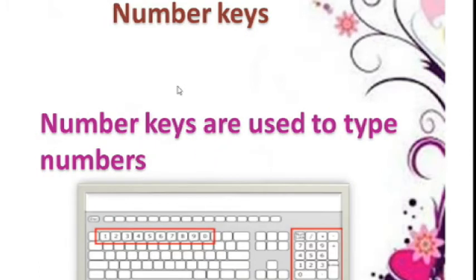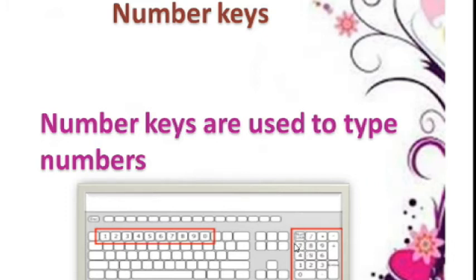Next we discussed about number keys. Keys labelled with numbers from 0 to 9. Look at the picture — you can see numbers on some keys. These are called number keys. We can see two sets of number keys on the keyboard: one at the top and one at the right side. Number keys are used to type numbers.